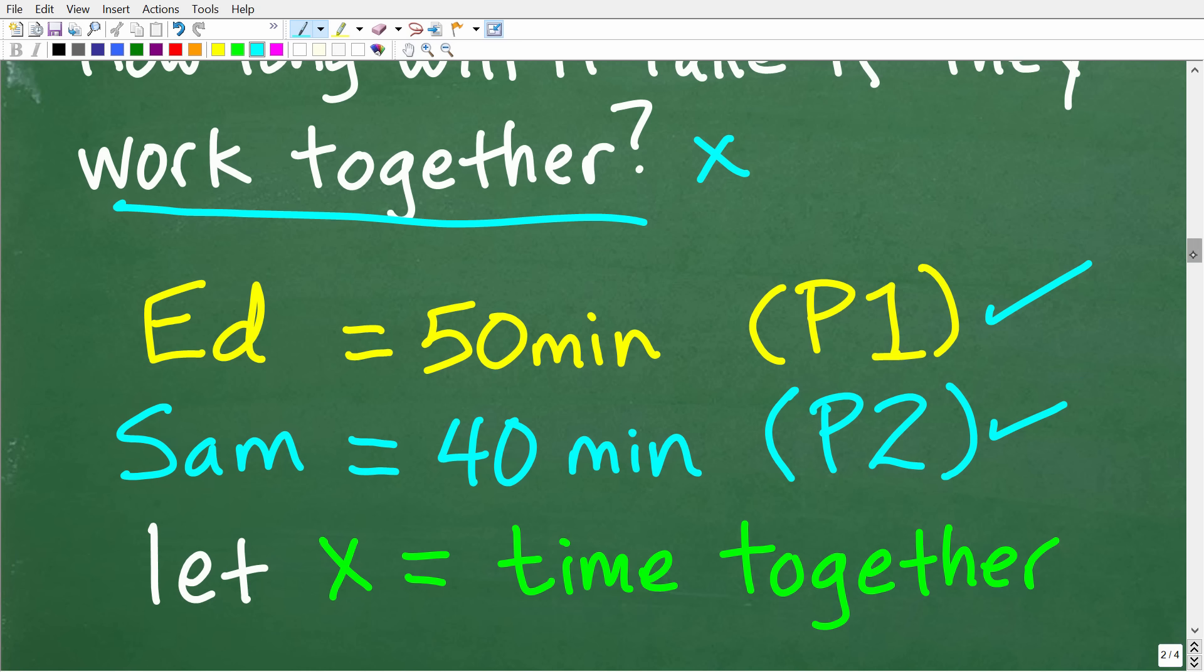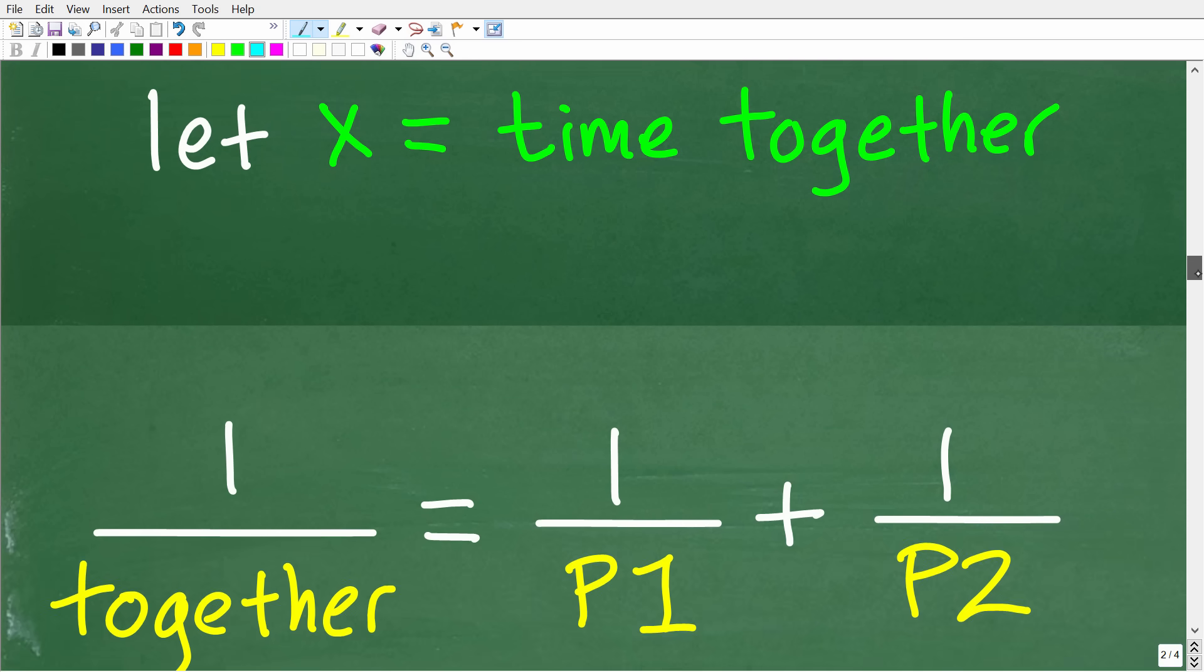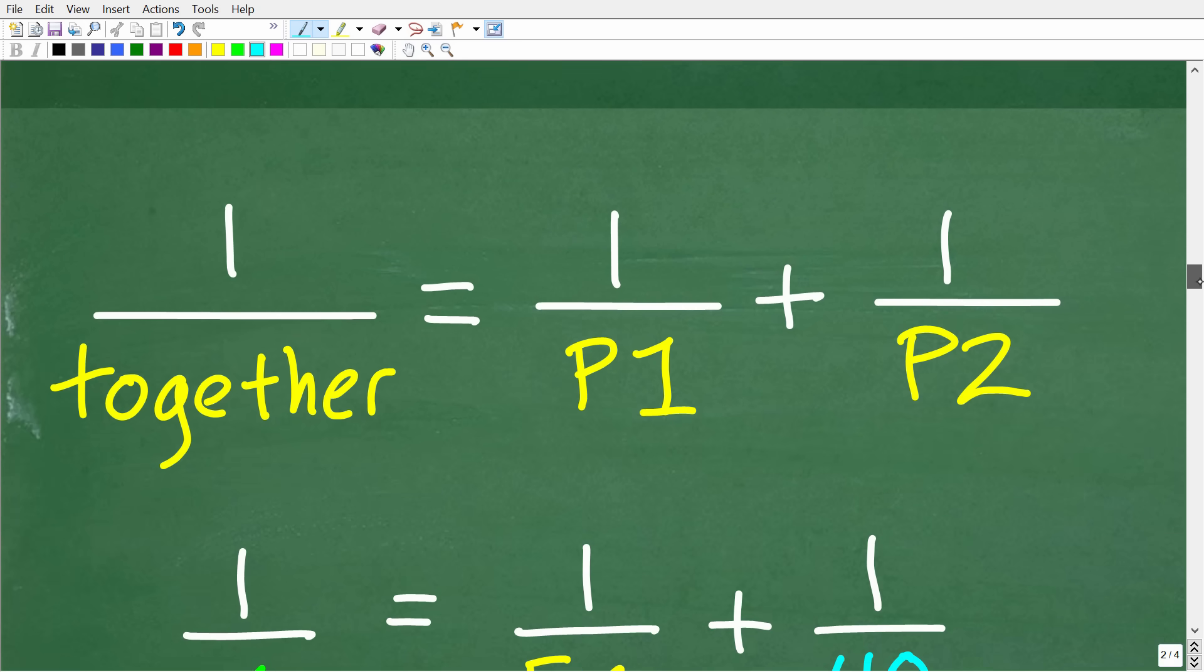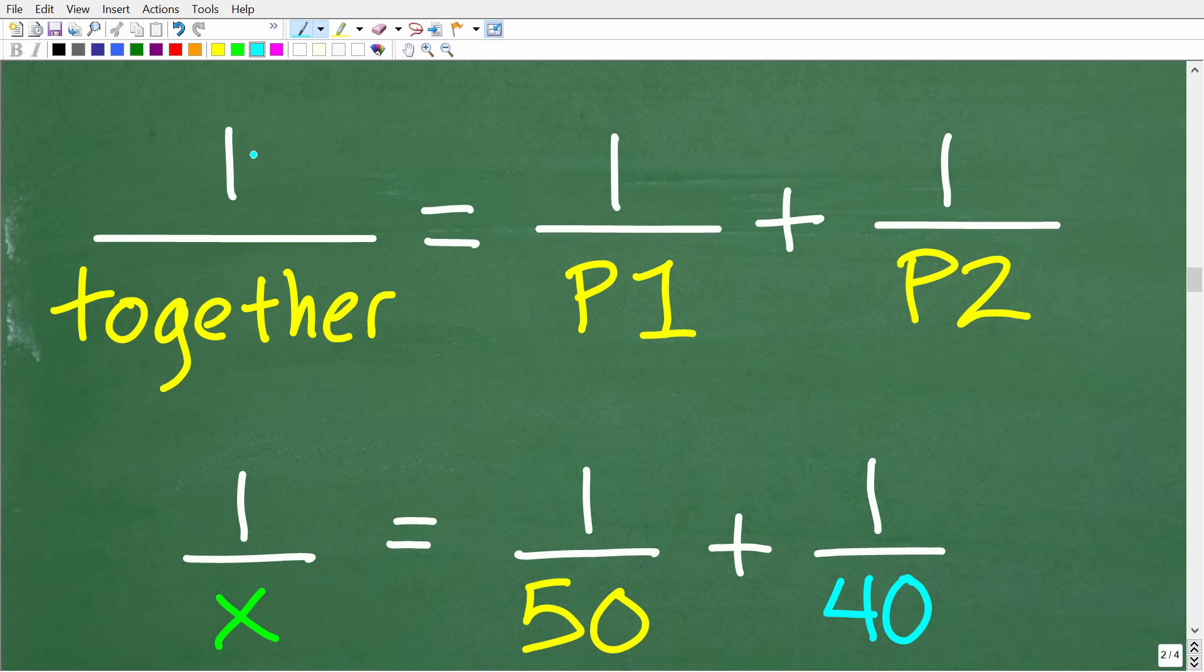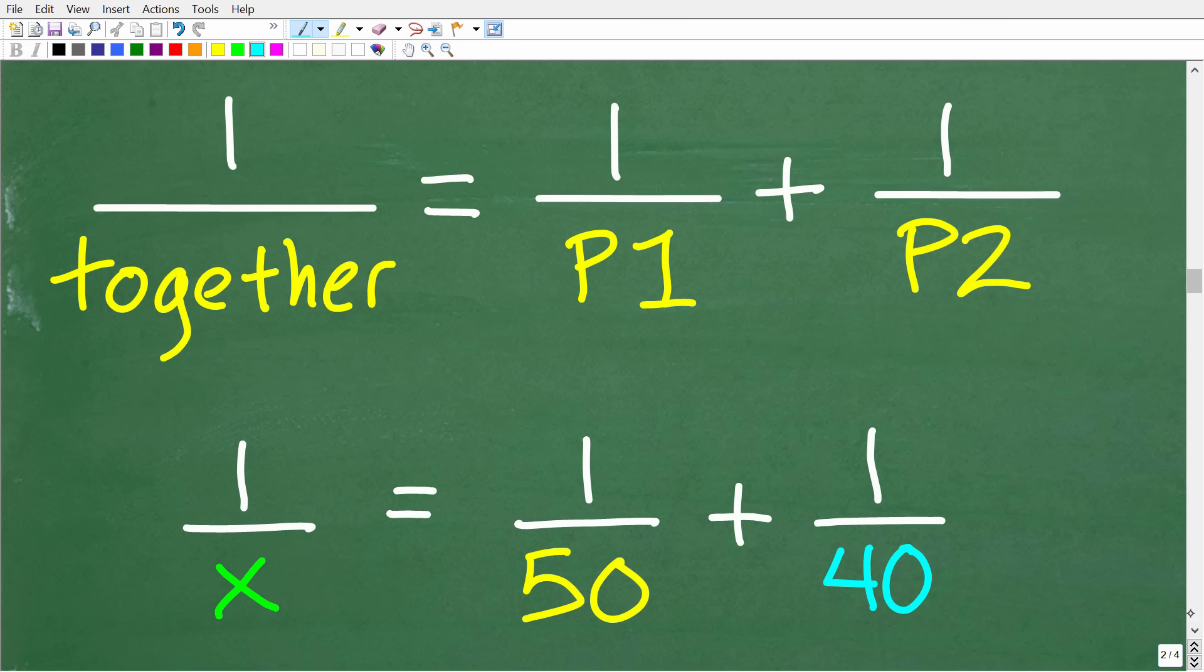So, all we have to do now is plug this information into our formula. So, here is the formula. 1 over the time it takes them working together is equal to 1 over P1 plus 1 over P2. So, all we're going to do is simply plug in our information. So, this is going to be 1 over X is going to be equal to 1 over 50 plus 1 over 40.